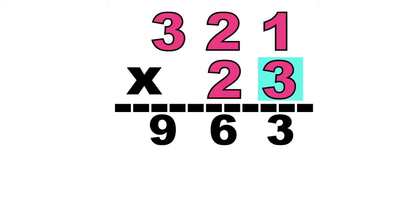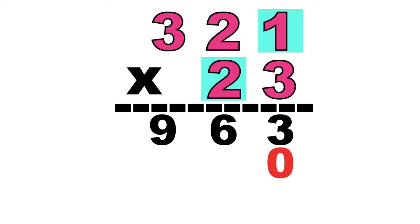Let's go on to the second digit at the second factor, which is digit 2. But before that, let's write an imaginary 0 here. So let's multiply. 2 times 1 equals? Very good, that is 2. So we're going to write 2 under the 10s place. That's why we put an imaginary 0 so that you will not forget where you will write the product.